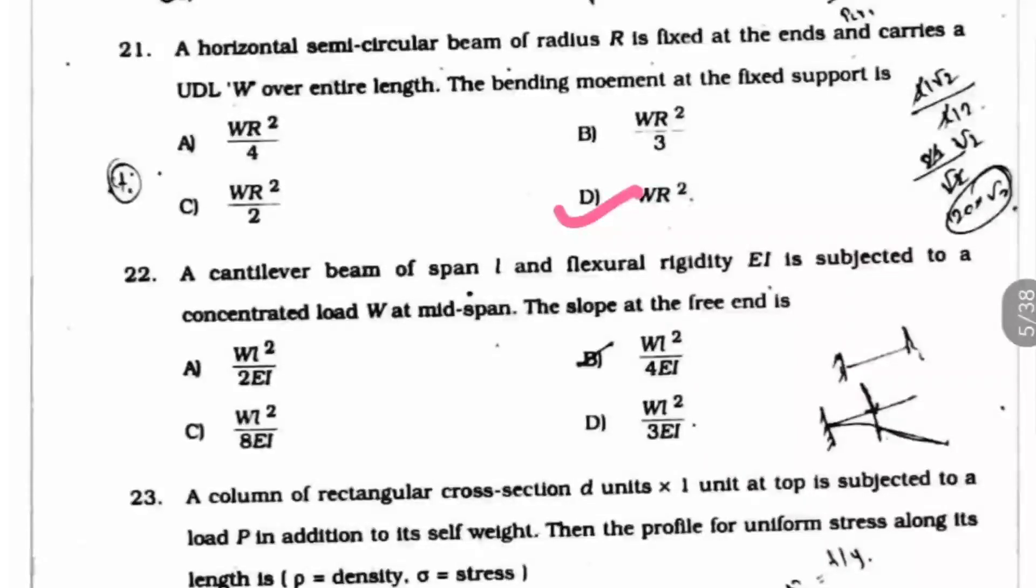Question 22: A cantilever beam of span L and flexural rigidity EI is subjected to a concentrated load W at mid-span. The slope at the free end is what? Here option C is the right answer, WL square by 8EI.